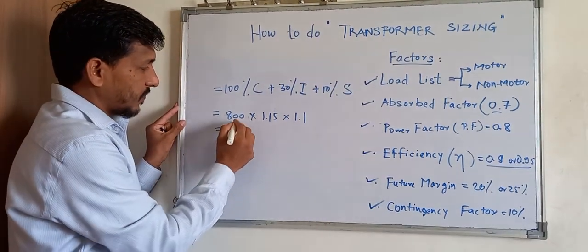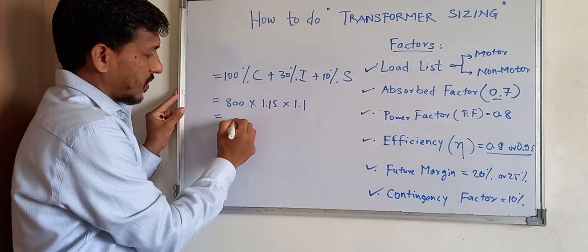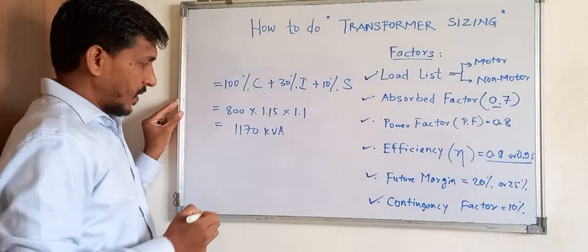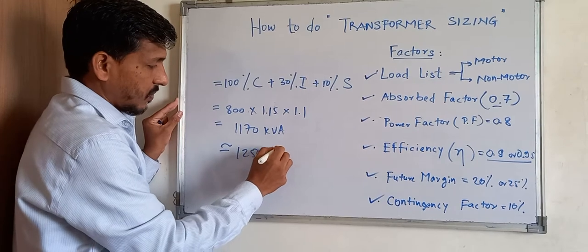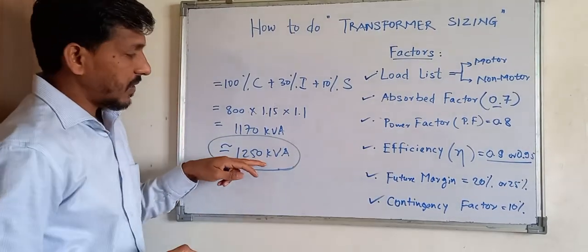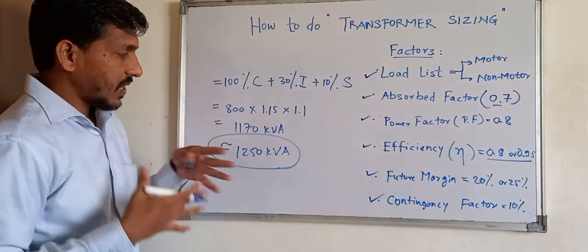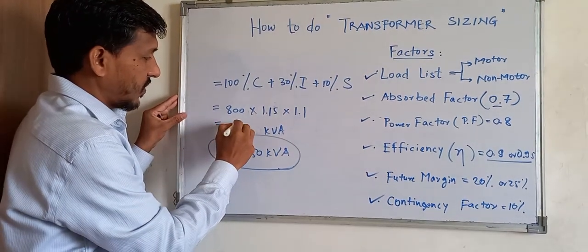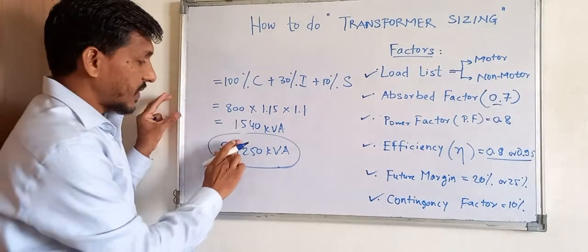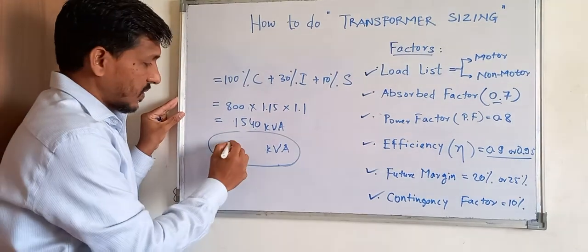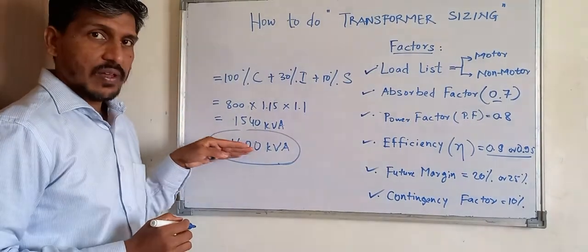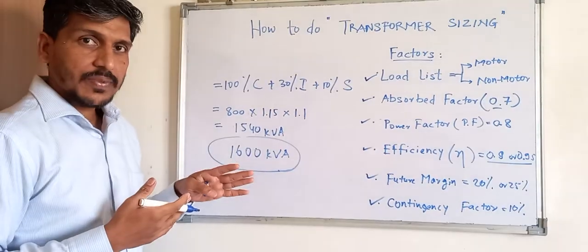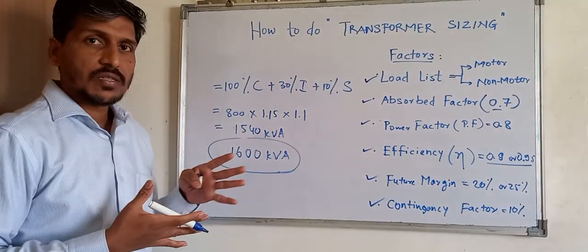After applying the margins, you may arrive at a value such as 1170 kVA. You then select the nearest standard transformer rating. For example, if you get 1500 kVA, you would recommend 1600 kVA. Standard ratings are typically 1250 kVA, 1600 kVA, 2000 kVA, and 2500 kVA. Always recommend a standard rating nearest to your calculated value.